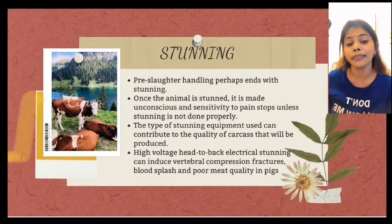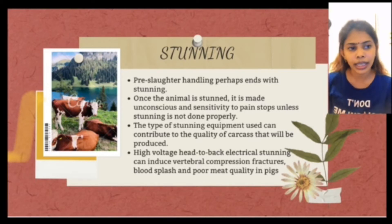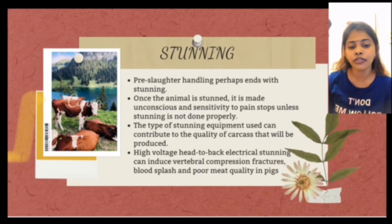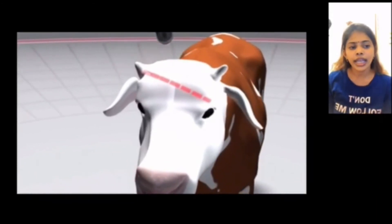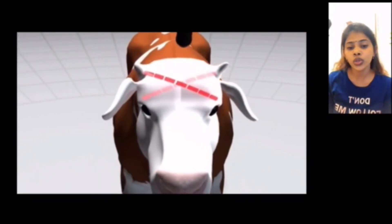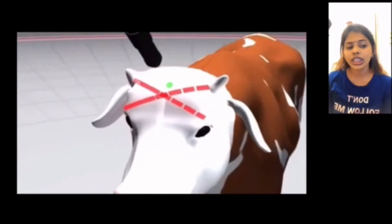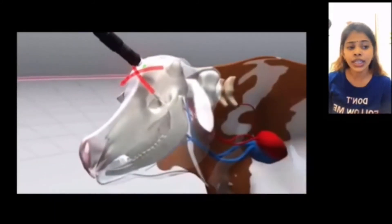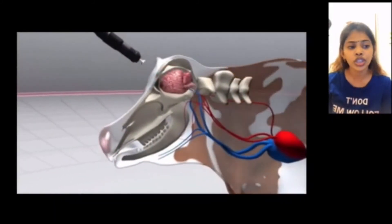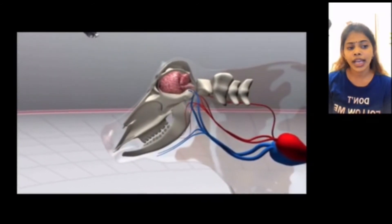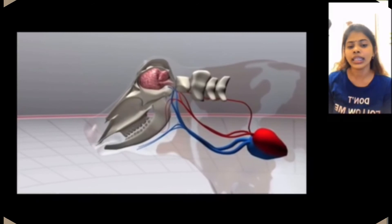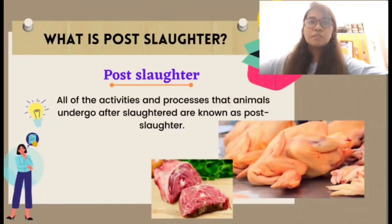The last factor of the pre-slaughter process affecting meat quality is stunning. Pre-slaughter handling perhaps ends with the stunning method. Once the animal is stunned, it is made unconscious and insensitive to pain. If stunning is not done properly, the type of stunning equipment used can also contribute to the quality of meat produced. High-voltage head-to-back electric stunning can induce vertebral compression fractures, blood splash, and poor meat quality in pigs.